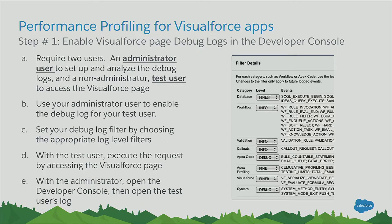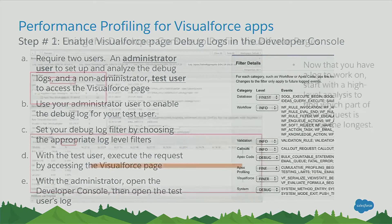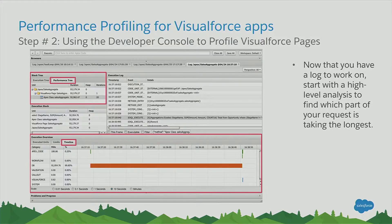Once this is set up for a particular user, log into that user and access the Visualforce page you want to profile. The logs are captured in the system. The next step is to open up your developer console and access the log. As soon as you open up the developer console, the logs are available at the bottom and the whole information comes up. I've presented a screenshot of how the screen looks — this is the basic look of the developer console utility.